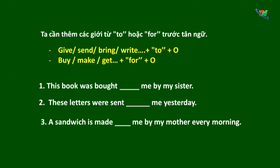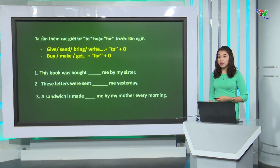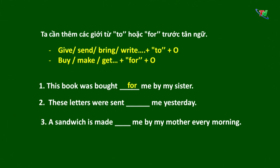Xin mời các em cùng suy nghĩ và đưa ra đáp án. Câu số 1: 'This book was bought for me by my sister.' — dùng 'for' vì động từ là 'buy'. Câu số 2: động từ là 'send', nên dùng 'to': 'These letters were sent to me yesterday.' Câu số 3: động từ là 'make', nên dùng 'for': 'A sandwich is made for me by my mother every morning.'